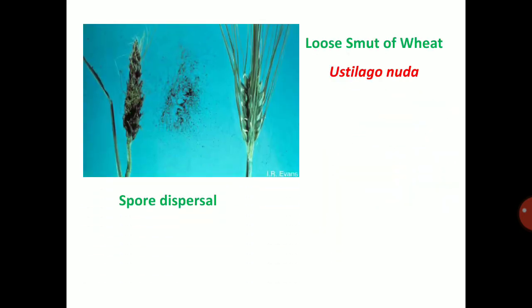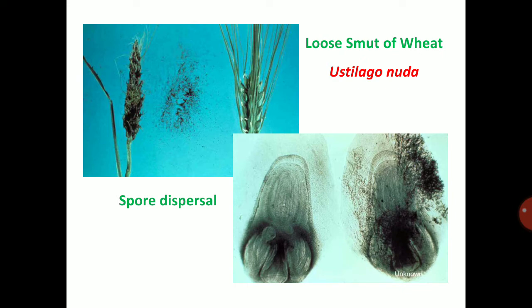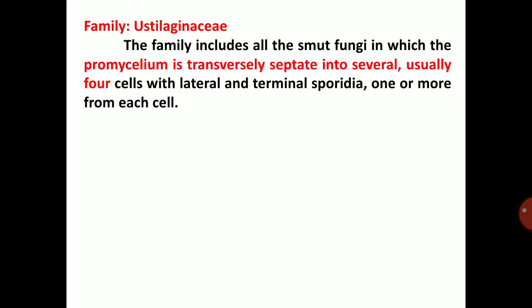These photos represent the dispersal of smut spores from infected to healthy plants. From infected earhead to healthy earhead, black color smut spores travel through wind. This also represents the dissemination of smut spores. Family Ustilaginaceae general characters: the family includes all smut fungi in which the promycelium is transversely septate into several — usually four — cells, with lateral and terminal sporidia, one or more from each cell.